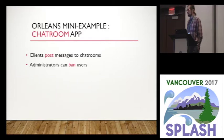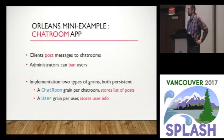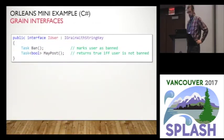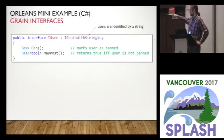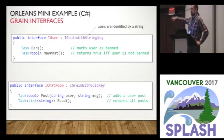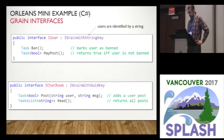Let me give an example of what the code would look like. If you have clients posting messages to chat rooms and administrators banning users, you could make a grain for each chat room and a grain for each user. The user interface has two calls: 'ban', which sets a flag to not allow posting, and 'may post', which checks if this user has the right to post. The chat room grain has a post operation and a read operation. Users are identified by a string key and chat rooms by a GUID key.